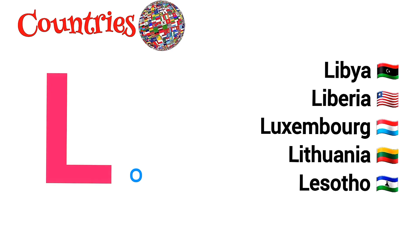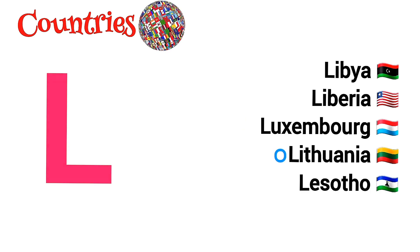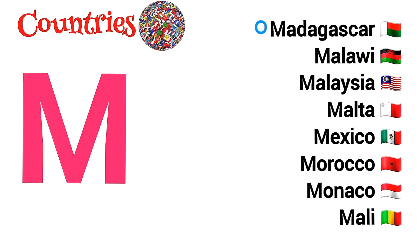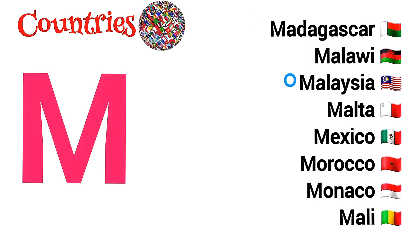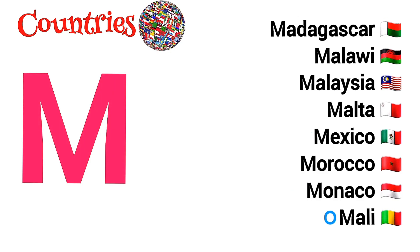L is for Libya, Liberia, Luxembourg, Lithuania, Lesotho. M is for Madagascar, Malawi, Malaysia, Malta, Mexico, Morocco, Monaco, Mali.